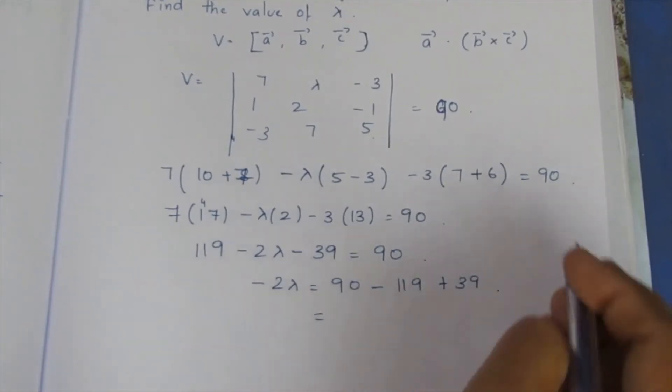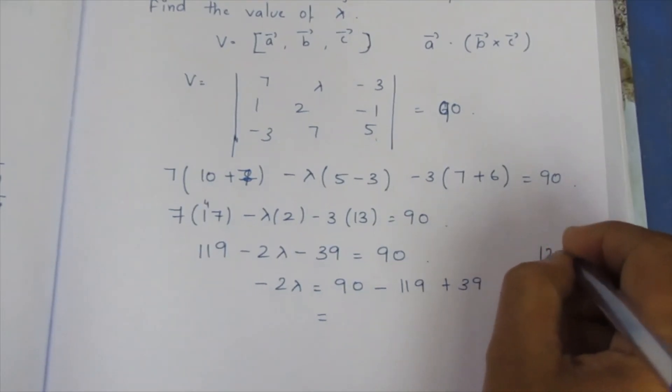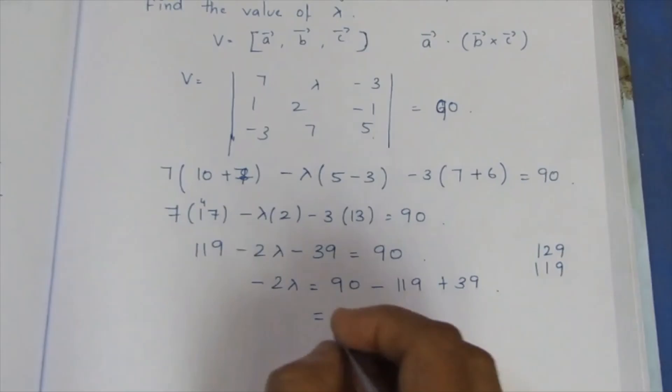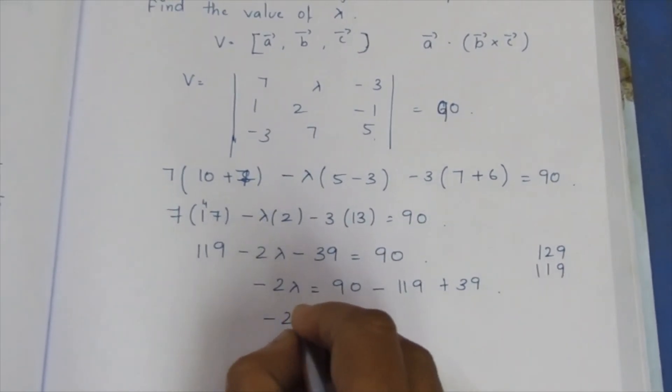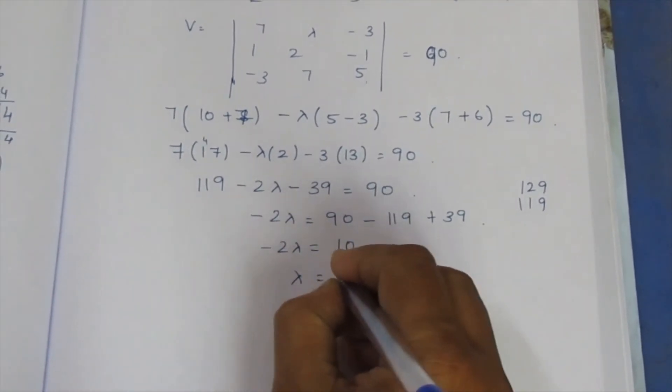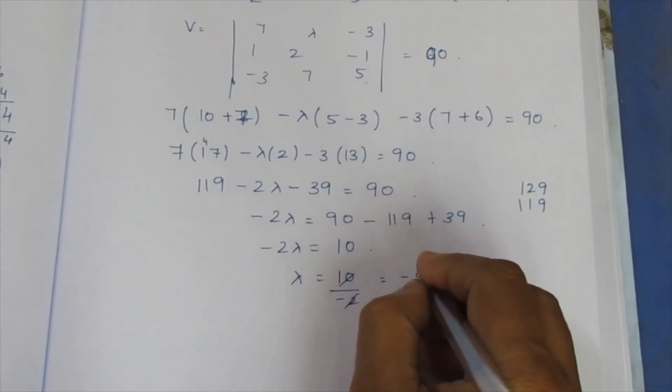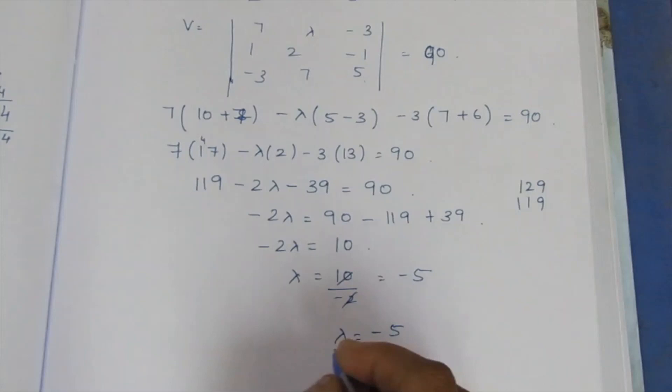Minus 2 lambda equal to 90 minus 119 plus 39. So this 2, 129 minus 119 is 10, greater number sign plus, so plus 10. So lambda equal to minus 2 divide 10 by minus 2, cancel minus, minus 5. So lambda value minus 5.